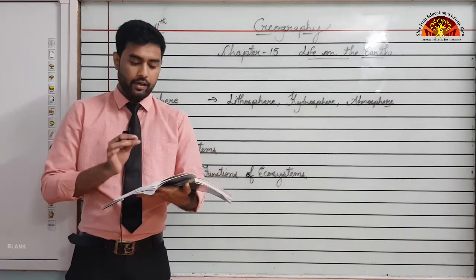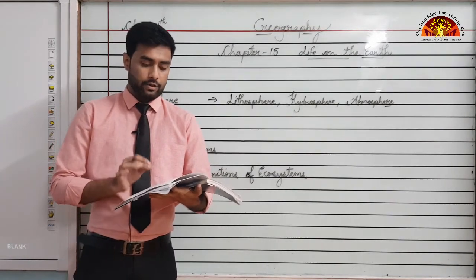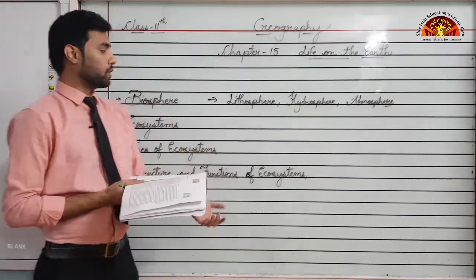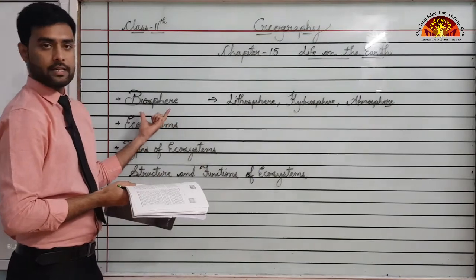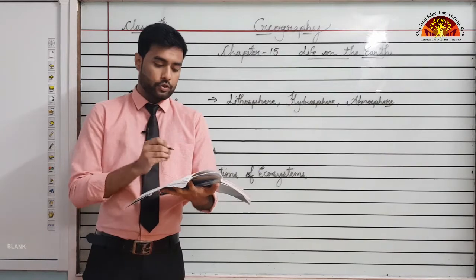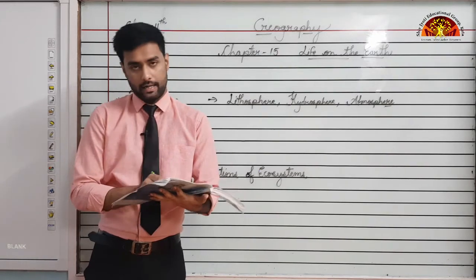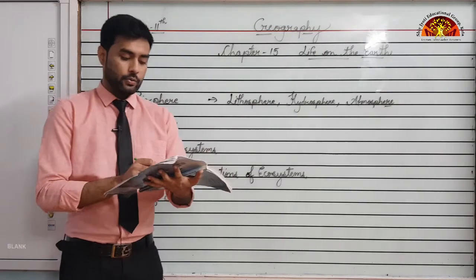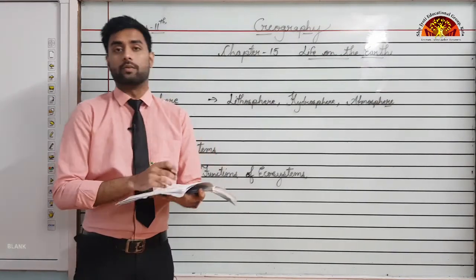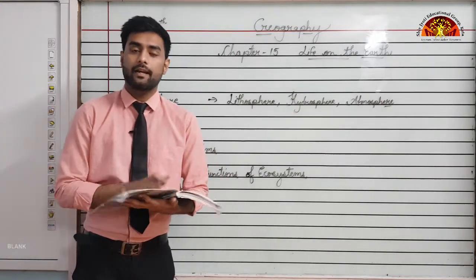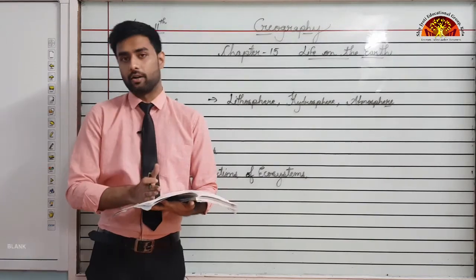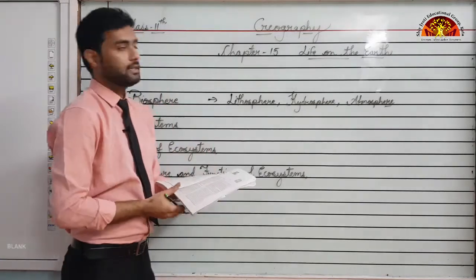Living organisms of the Earth constituting the biosphere interact with other environmental realms. The biosphere includes all the living components of the Earth. It consists of all plants and animals including all microorganisms that live on the planet Earth and their interaction with the surrounding environment.